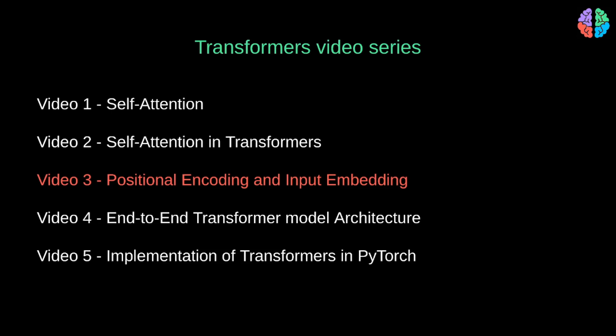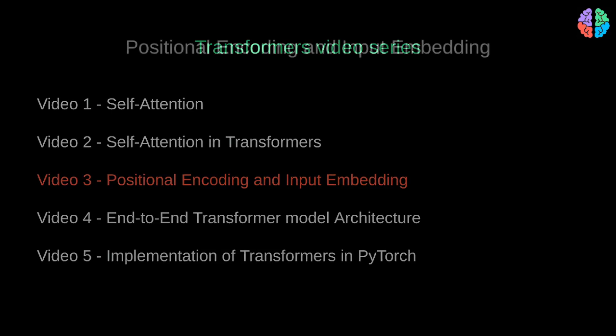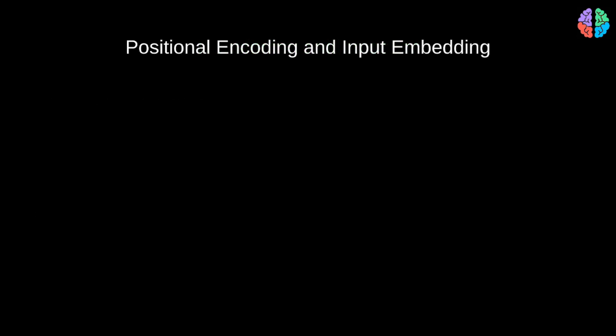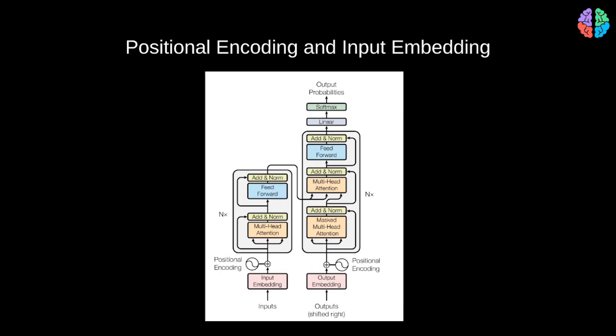Hi everyone, welcome to part 3 of the series on transformers. This is a well-known figure of the transformer architecture. In my previous video, we saw about the multi-headed attention, which is the core building block of the transformers. What we are yet to see is the positional encoding and input embedding modules. So let's take a look at them in this video.